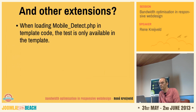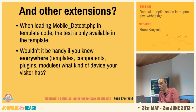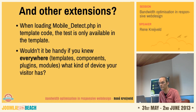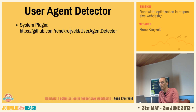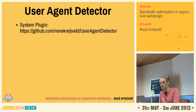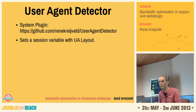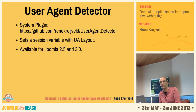Wouldn't it be handy if you knew — everywhere, in templates, components, plugins, and modules — what kind of device your visitor has? To address this, I created a system plugin called User Agent Detector. It's available on GitHub, free to download, and regularly updated. It's a system plugin that uses the Mobile Detect PHP library. This plugin sets a session variable with the user agent layout. It's available for Joomla 2.5 and 3.0, and within a week it should also be available for Joomla 3.1.